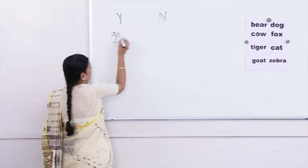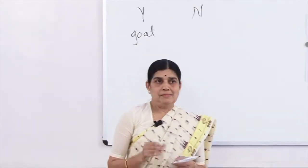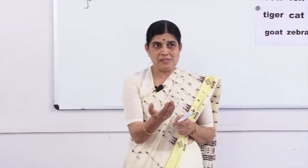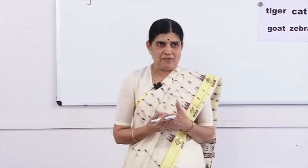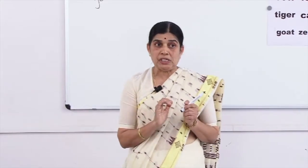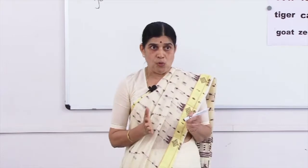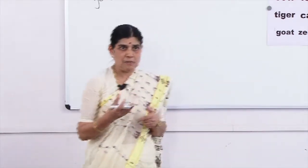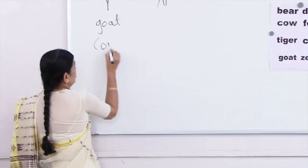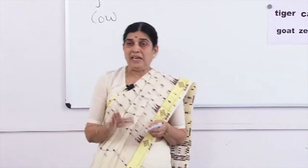Goat is the first positive example. A student suggests: the positive example for goat can be cow, because goat is an herbivore, a domestic animal. You have to give examples from this list only. You do not have to explain the attributes now — once you get all the positive examples, think about commonalities. Cow is also a positive example of the concept I have in my mind.